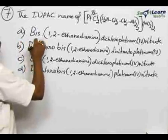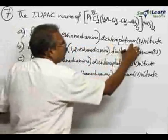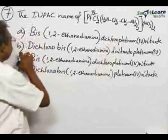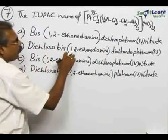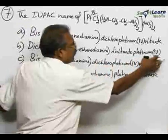Option A: bis within bracket 1,2-ethanediamine dichloroplatinum(IV) nitrate. Option B: dichlorobis within bracket 1,2-ethanediamine dinitrate of platinum(IV).